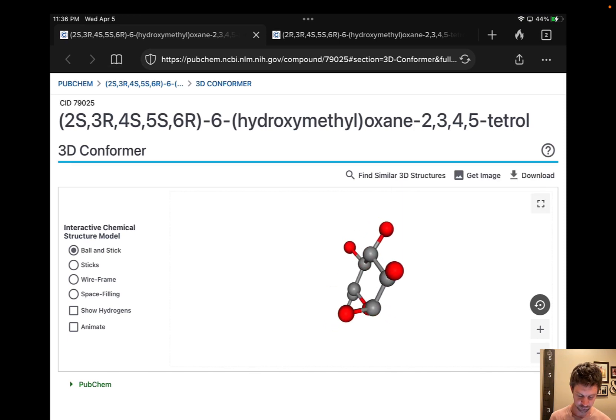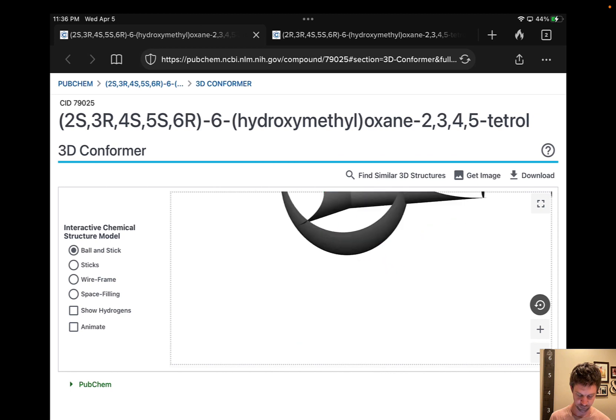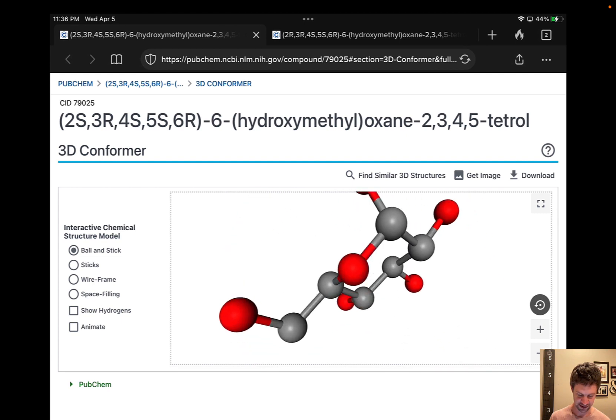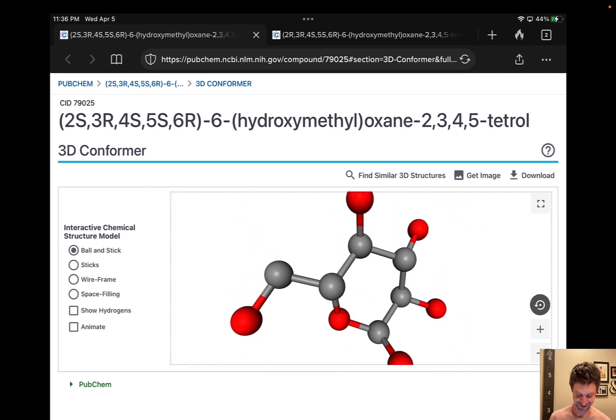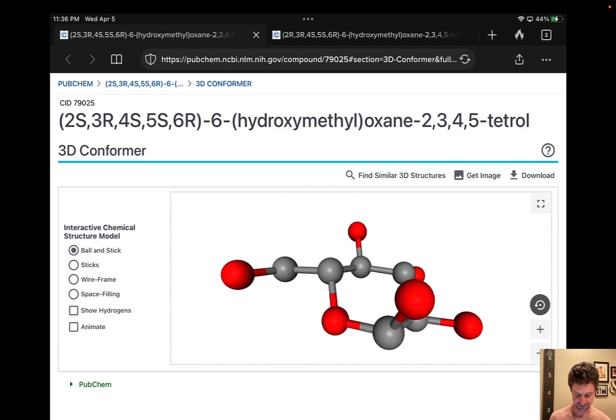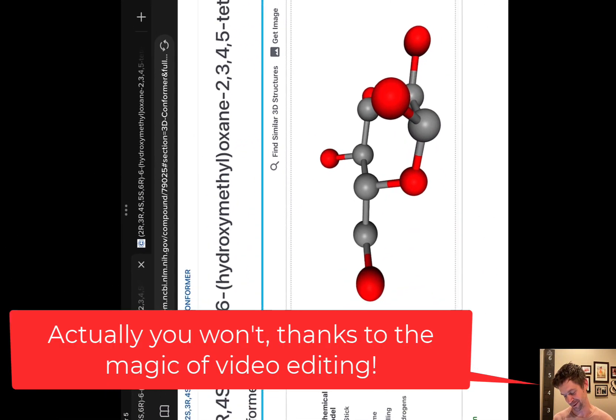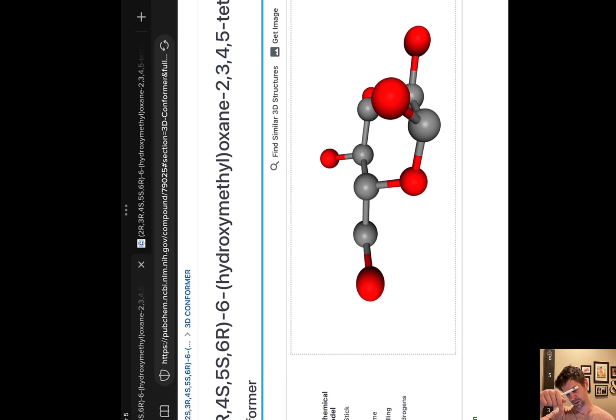And we can assume a viewpoint where we're looking at carbon-5 from a Fischer projection sort of point of view. Let me see if I can turn this around to really achieve that. This might be easier said than done—you may need to turn your head slightly. But if you turn your head sideways so that the CH2OH group is at the bottom of your field of vision and carbon-4 is at the top of your field of vision, you'll see...